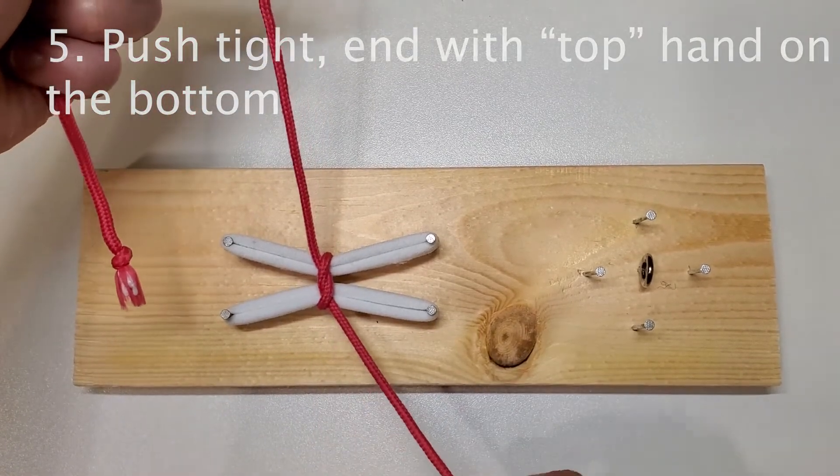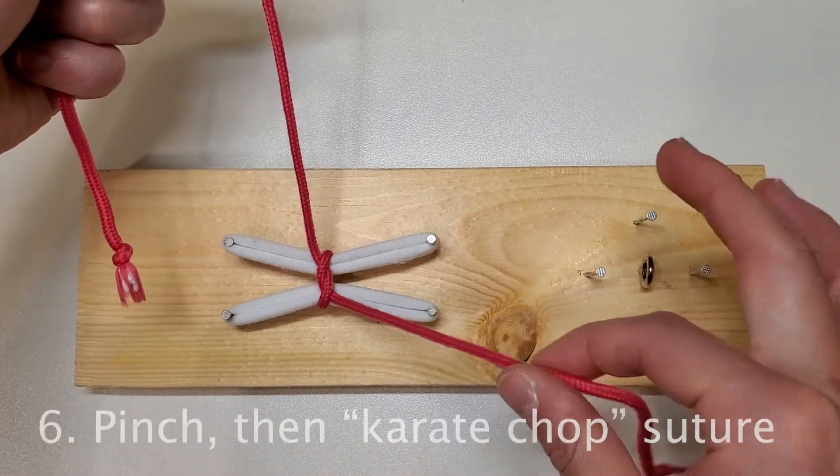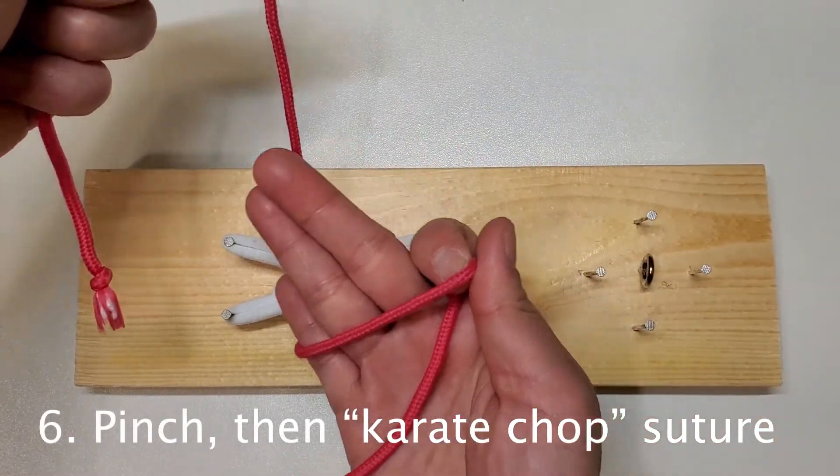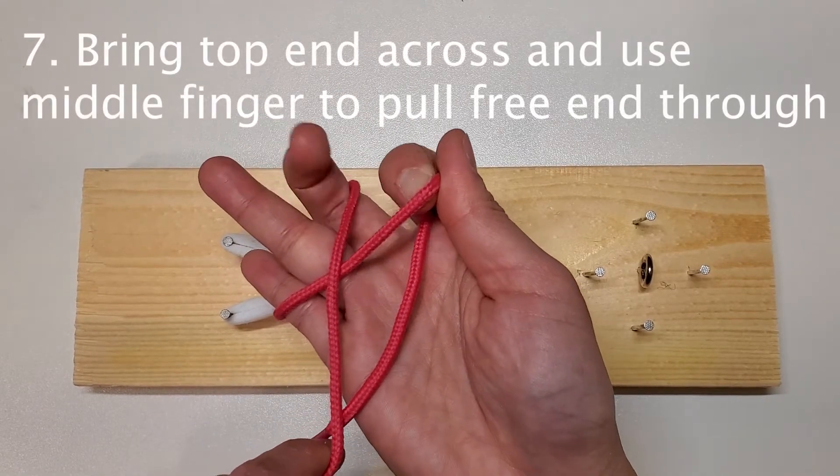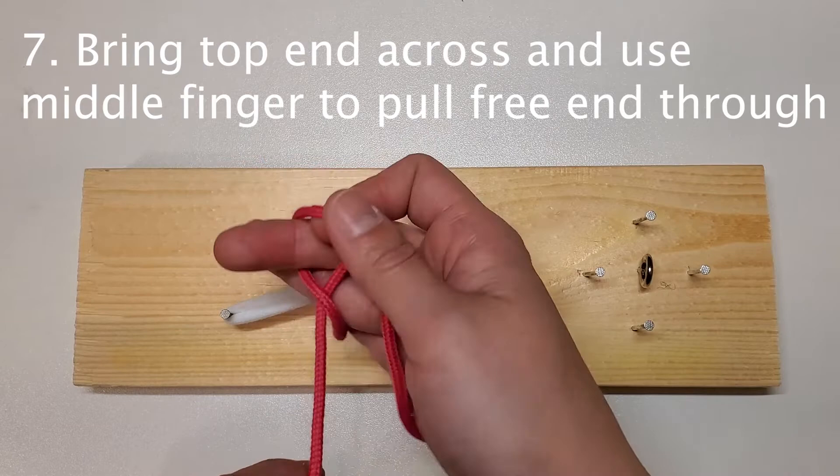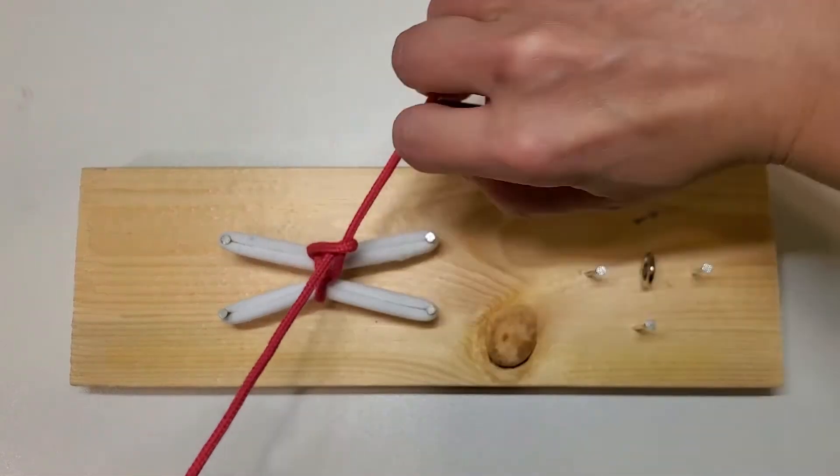Now that we're at the bottom, we'll pinch, karate chop our suture, present it to ourself, make a cross with our two strings. You'll take your middle finger and you'll grab it through the hole and the end at the top.